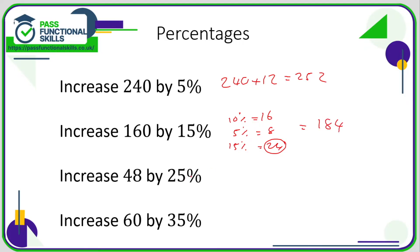25% - maybe you know that 25% is a quarter. So what is one quarter of 48? A quarter of 48 is 12, so we need to add 12 to 48, and 48 plus 12 is 60.